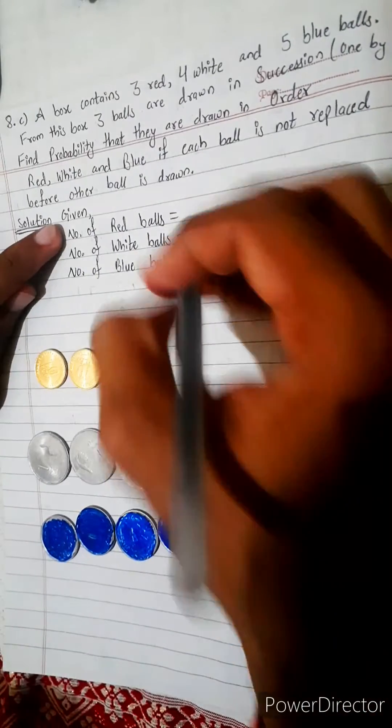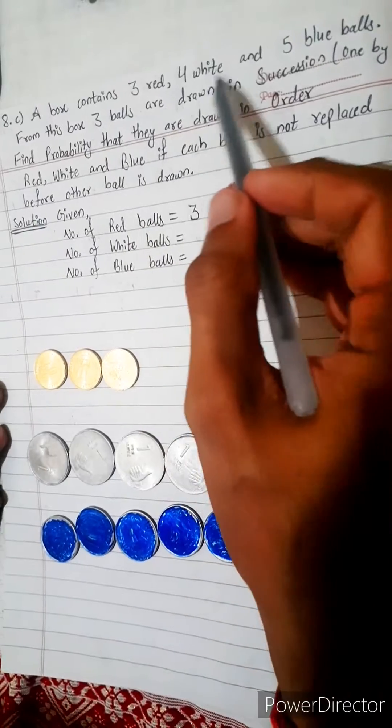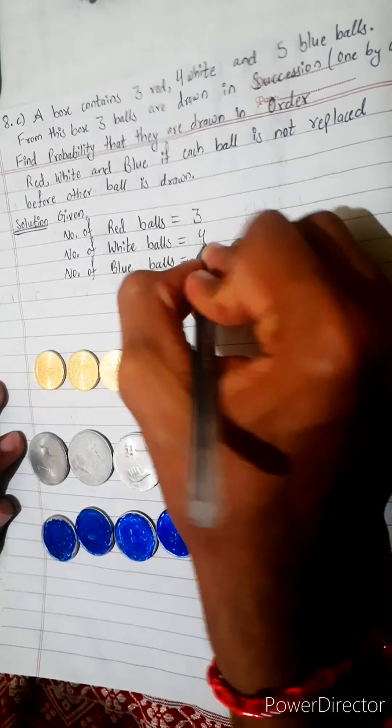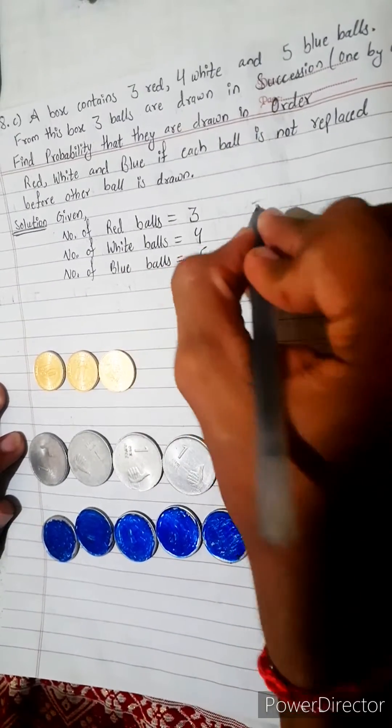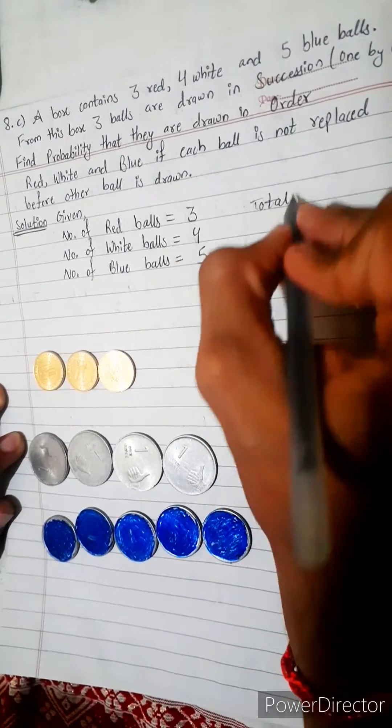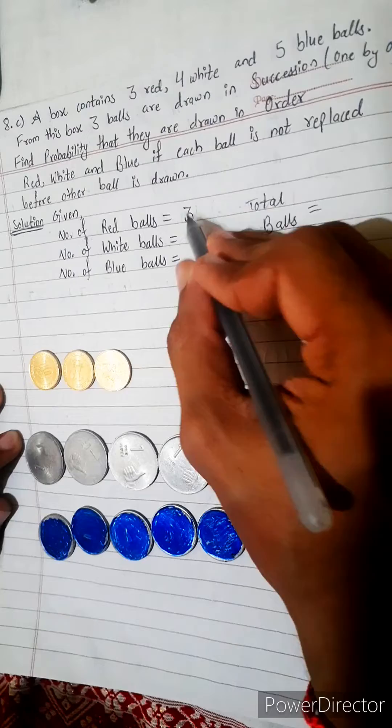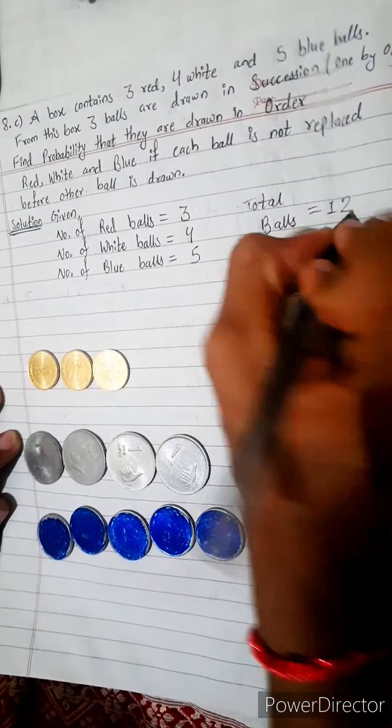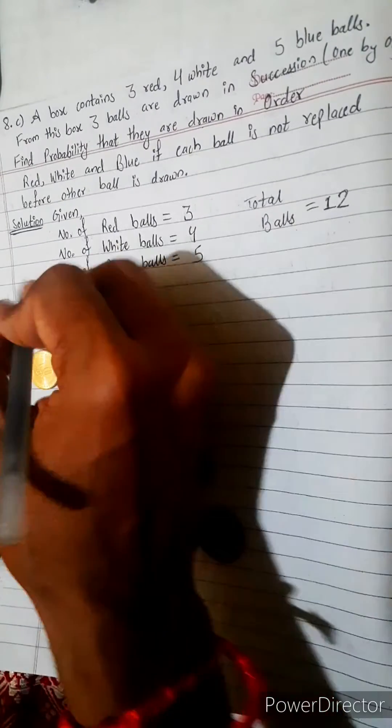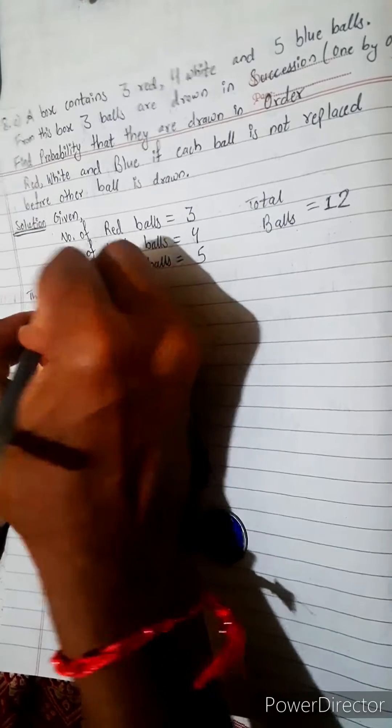Given: number of red balls equals 3, number of white balls equals 4, number of blue balls equals 5. Total balls equals 3 plus 4 plus 5 equals 12. Total balls are 12.